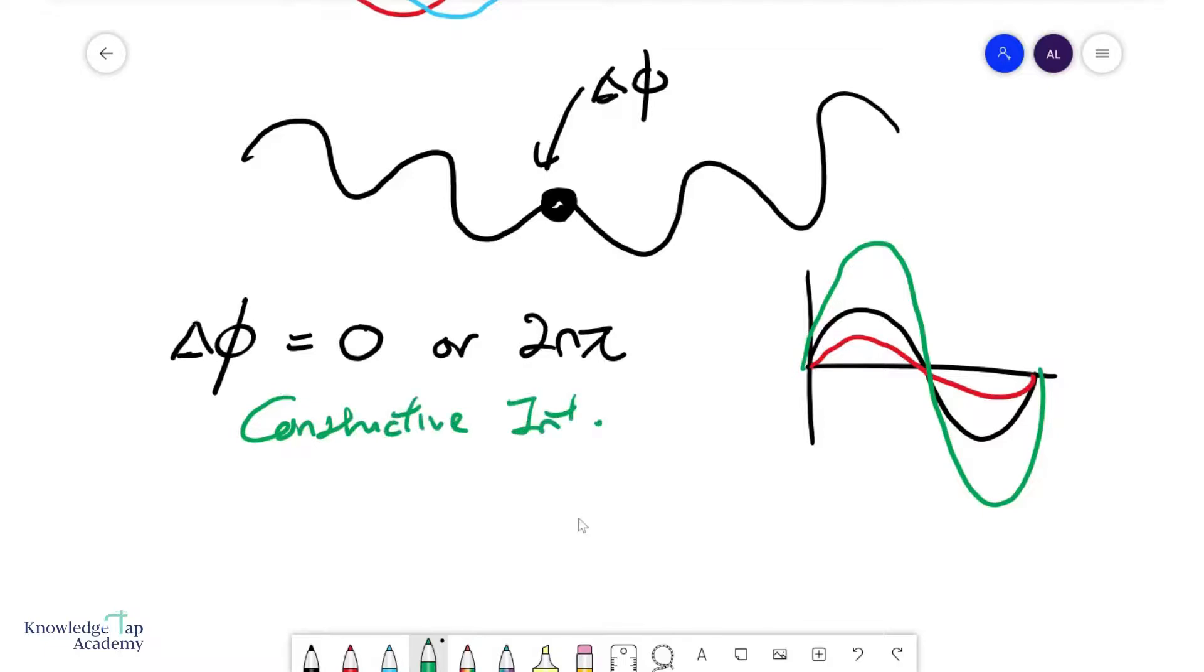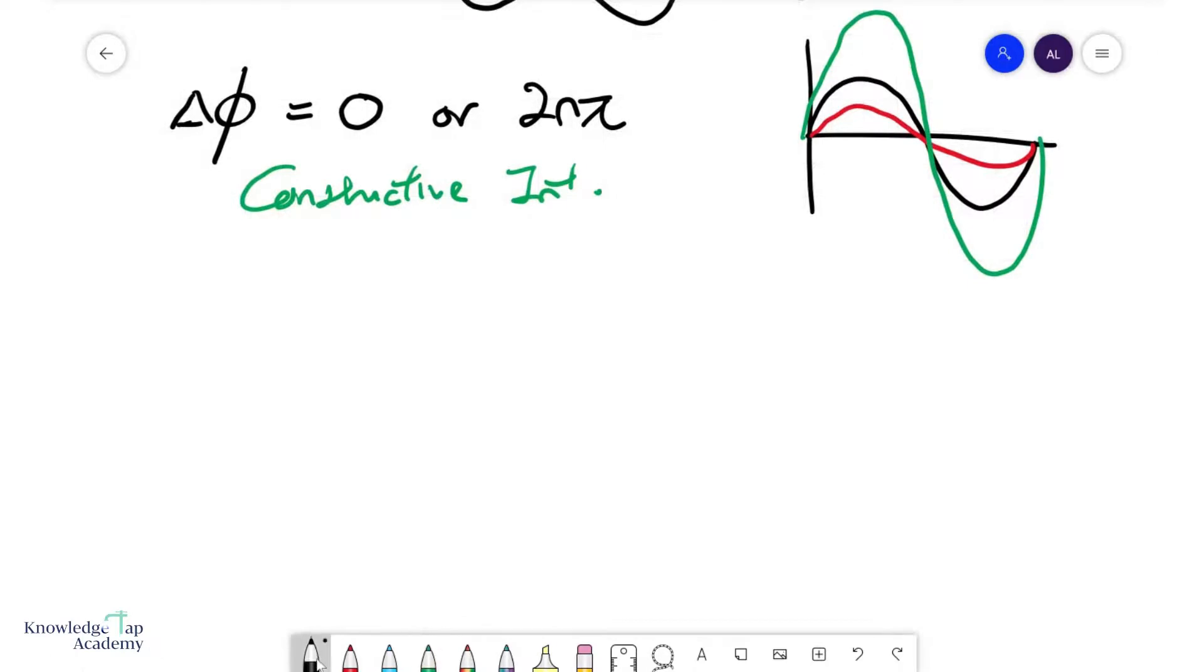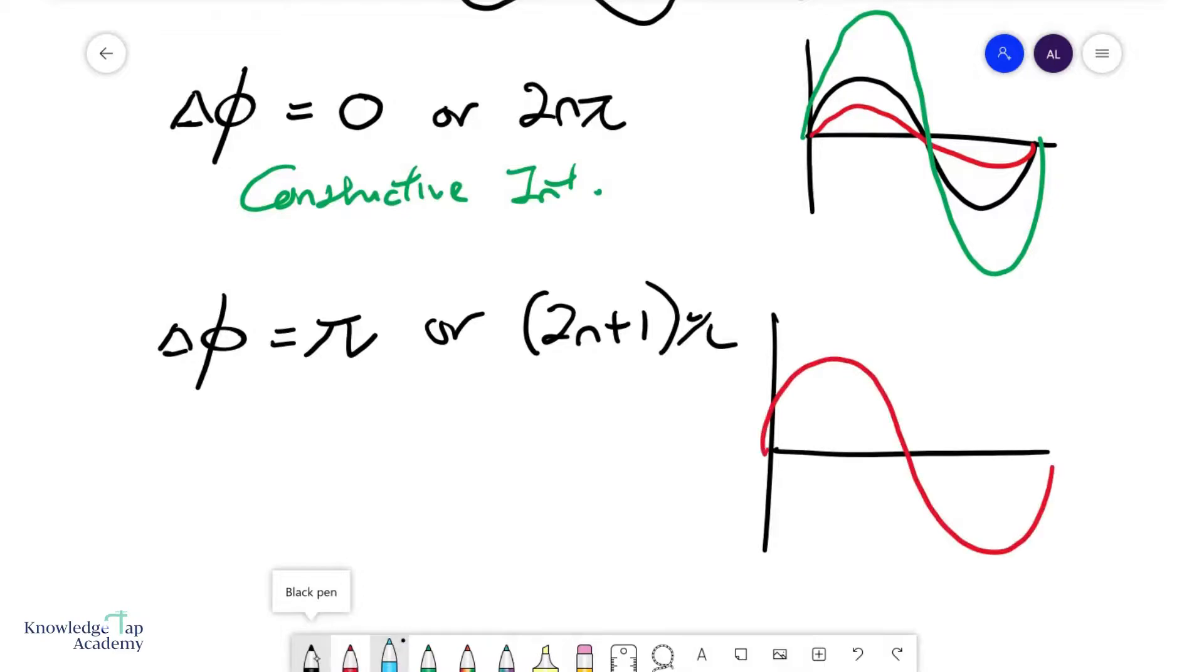Okay, and of course, you can also guess now, if the waves come in with a phase difference of pi, or some odd multiple of pi, then what you get will be something like this. One wave could come in like this, another wave could come in like that. And they're going to kill each other, and so you perpetually get a wave of smaller amplitude, and we call this destructive interference.